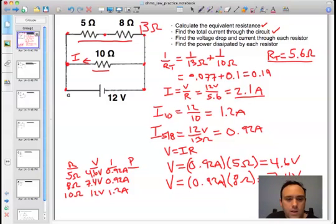The last thing we need to do is solve for the power. The equation we're using is P equals IV. Power equals current times voltage. So we're simply taking the product of these two numbers. Through the 5 ohm resistor, we have a power of 4.2 watts. Through the 8 ohm resistor, we have a power of 6.8 watts. And through the 10 ohm resistor, we have a power of 14.4 watts.